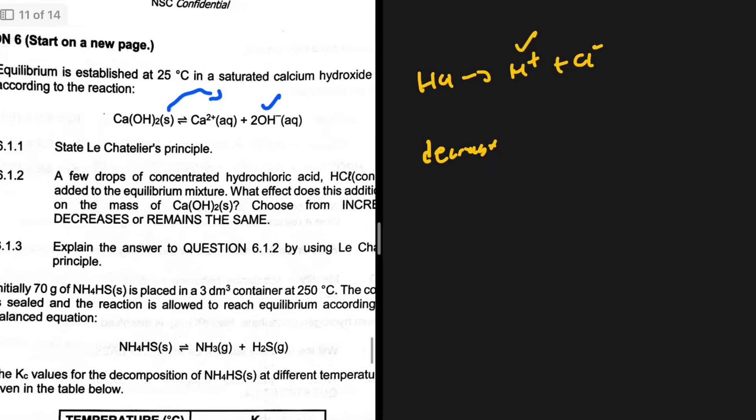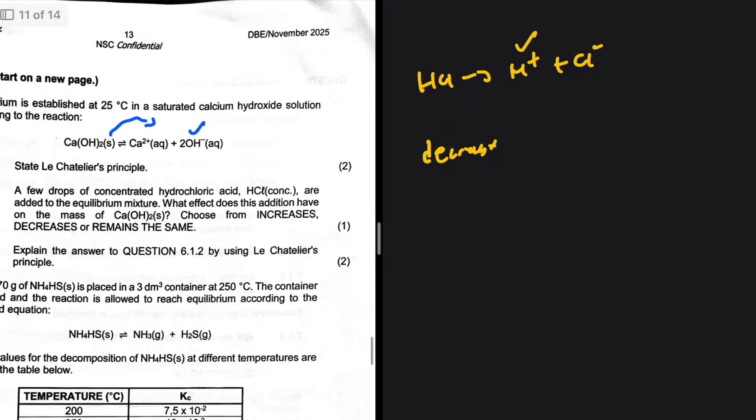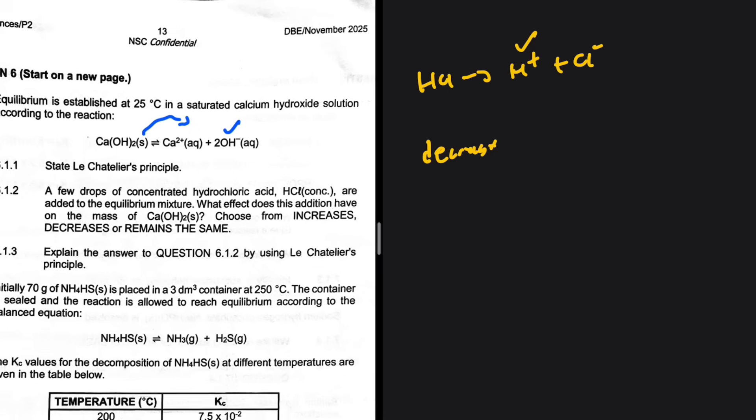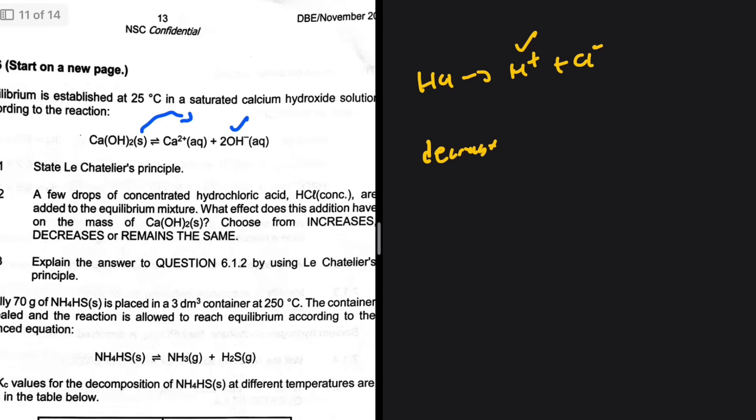6.1.3 says let's use Le Chatelier's principle to explain the answer to 6.1.2, which I just did. H+ will react with OH-, the concentration decreases. The system wants to reinstate a new equilibrium by favoring a reaction that opposes the change, hence forward reaction is favored and the mass of Ca(OH)2 will decrease.